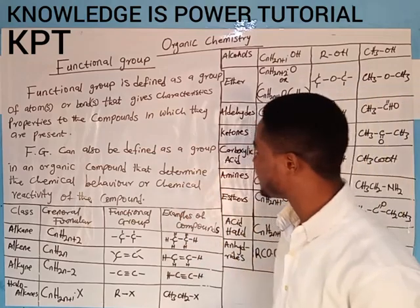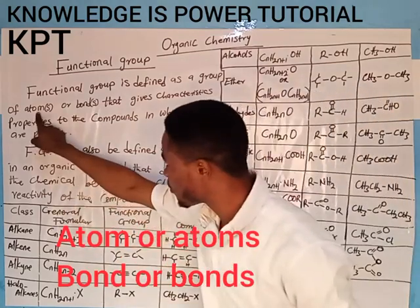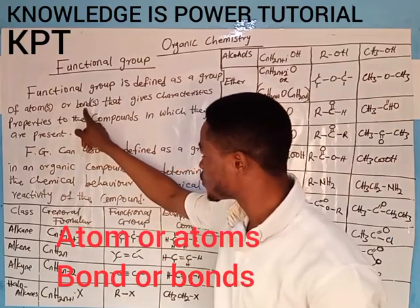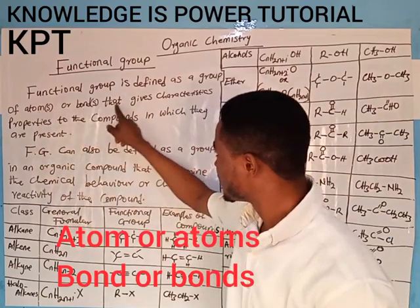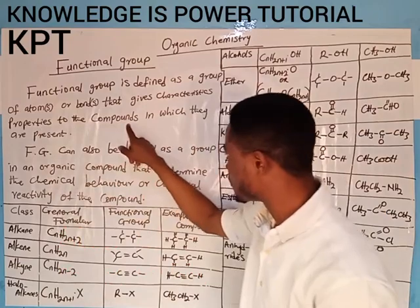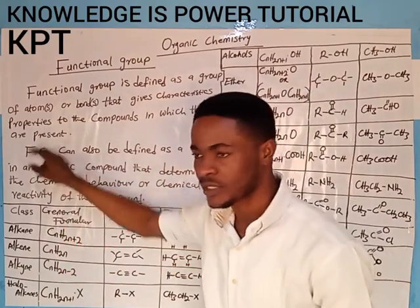Functional group is defined as a group of atom or atoms, or bonds, that gives characteristic properties to the compounds in which they are present.